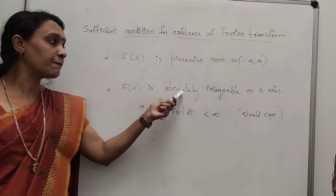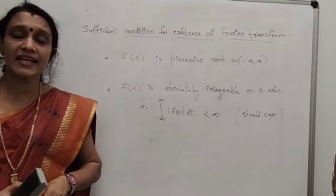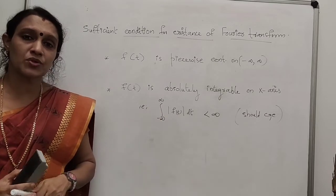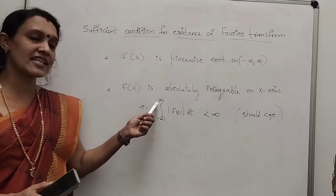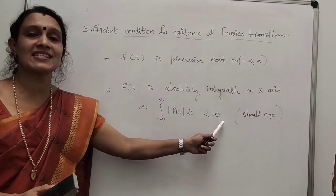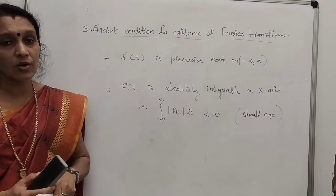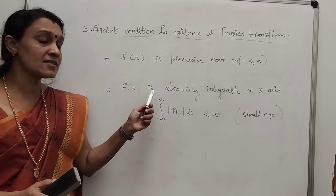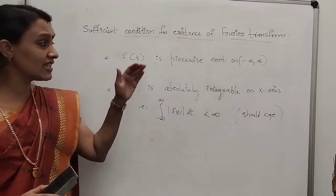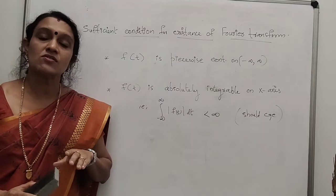Second, f(t) is absolutely integrable on the x-axis, meaning the integral from minus infinity to infinity of |f(t)| dt is finite (convergent). These are the two sufficient conditions for the existence of the Fourier transform.